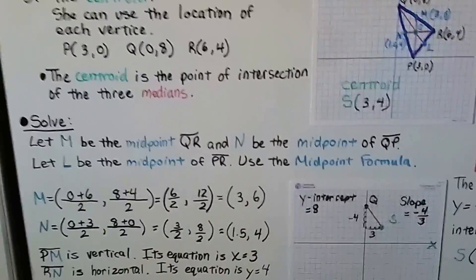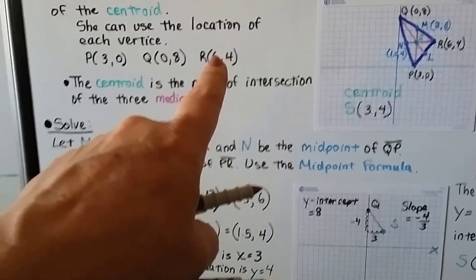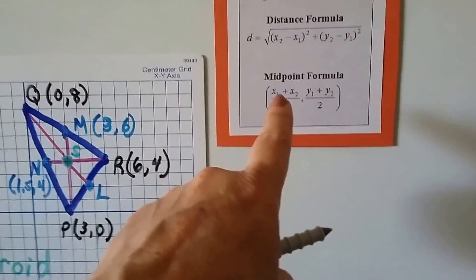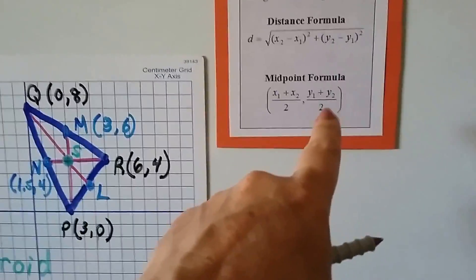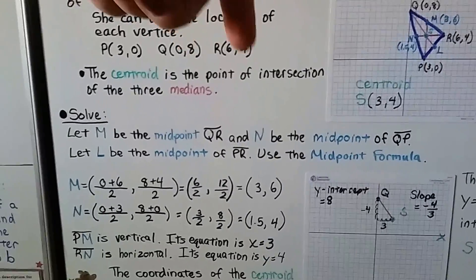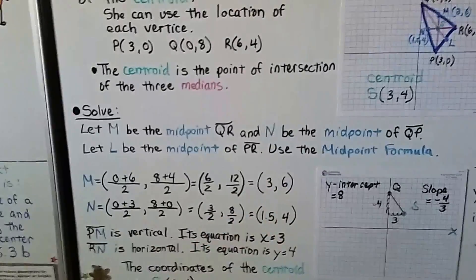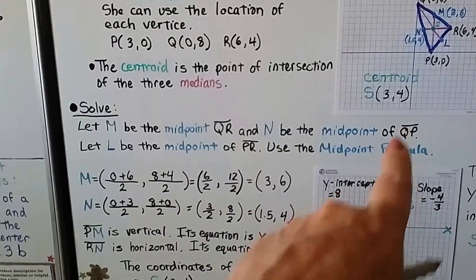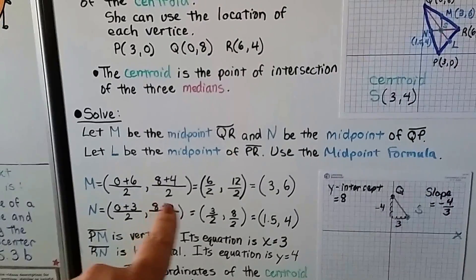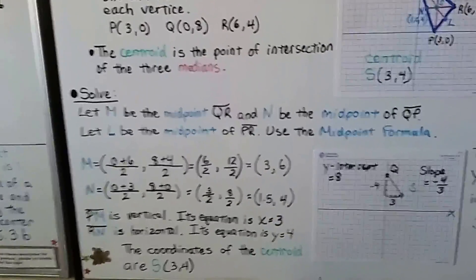We use the midpoint formula to find those midpoints, and we use the coordinates. So if M is the midpoint of QR, we're going to use Q as x and y sub 1, and R as x and y sub 2. Using the midpoint formula, we add the first and second x and divide it by 2, and add the first and second y and divide it by 2. So we have 0 plus 6, and then the first and second y is 8 plus 4, and they have to be divided by 2. That gives us 6 over 2 for x and 12 over 2 for y, which gives us 3 for x and 6 for y. We do the same thing with N. N is the midpoint of QP, which gives us 1.5 for x and 4 for y when we simplify it.